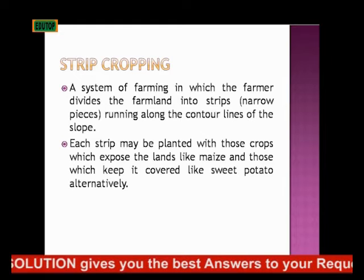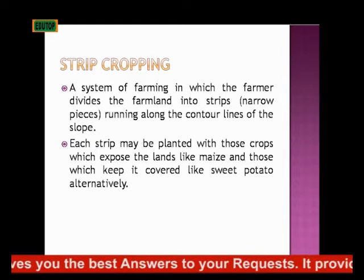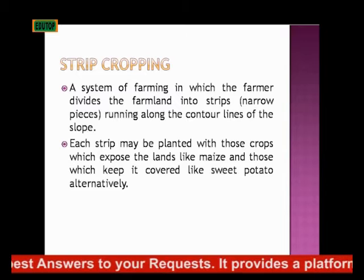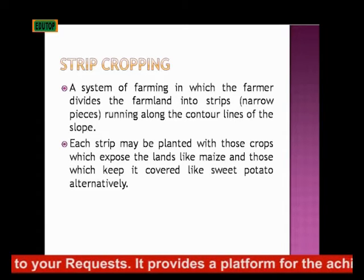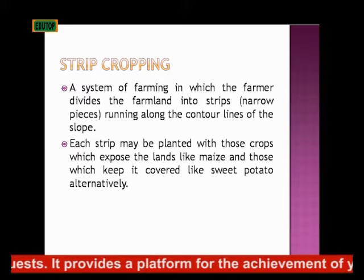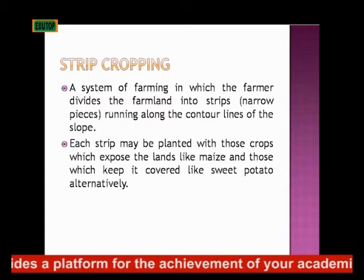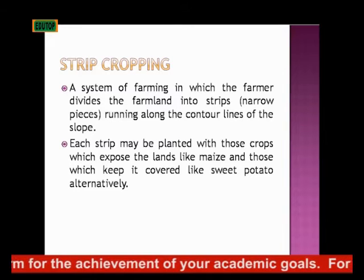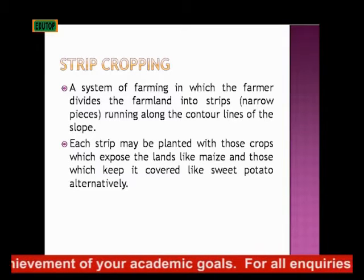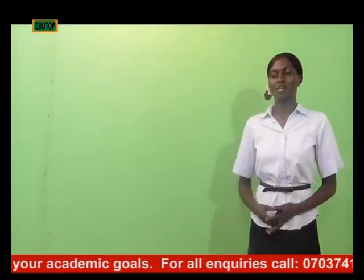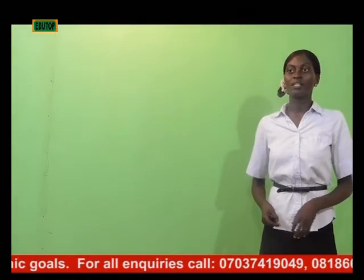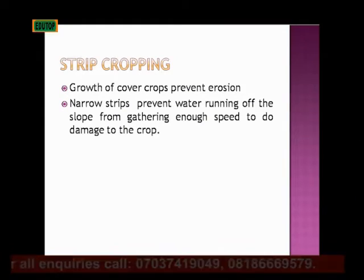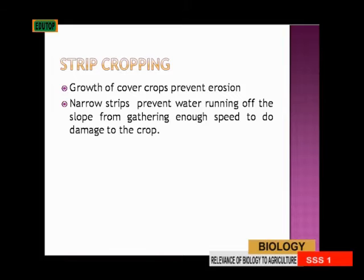The strip is planted with crops that expose the land, e.g. maize, and also with others that cover the land. Maize will just stand and leave spaces on the farm, but other plants that cover the soil are planted alternatively. For example, potato is your cover crop — potato will cover the soil while maize stands. That is what we call strip cropping. The growth of cover crops prevents erosion, and the narrow strips prevent water from running off the slope and gathering enough force to damage the crops.